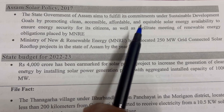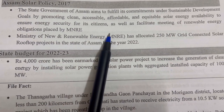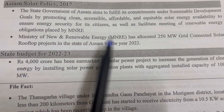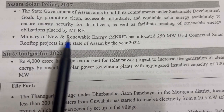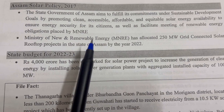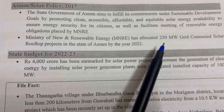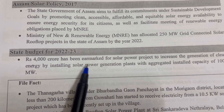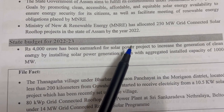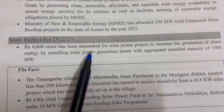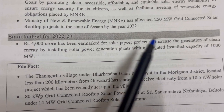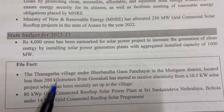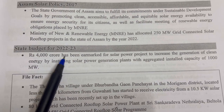Under the Assam Solar Policy 2017, the state government of Assam aims to fulfill commitments under the Sustainable Development Goals by promoting clean, accessible, affordable, and equitable solar energy to ensure energy security for citizens and meet renewable energy obligations placed by MNRE. MNRE has allocated 250 megawatt grid-connected solar rooftop projects in Assam by 2022. The state budget for 2022-23 has earmarked Rs. 4000 crore for solar power projects to install plants with an aggregated installed capacity of 1000 megawatt.